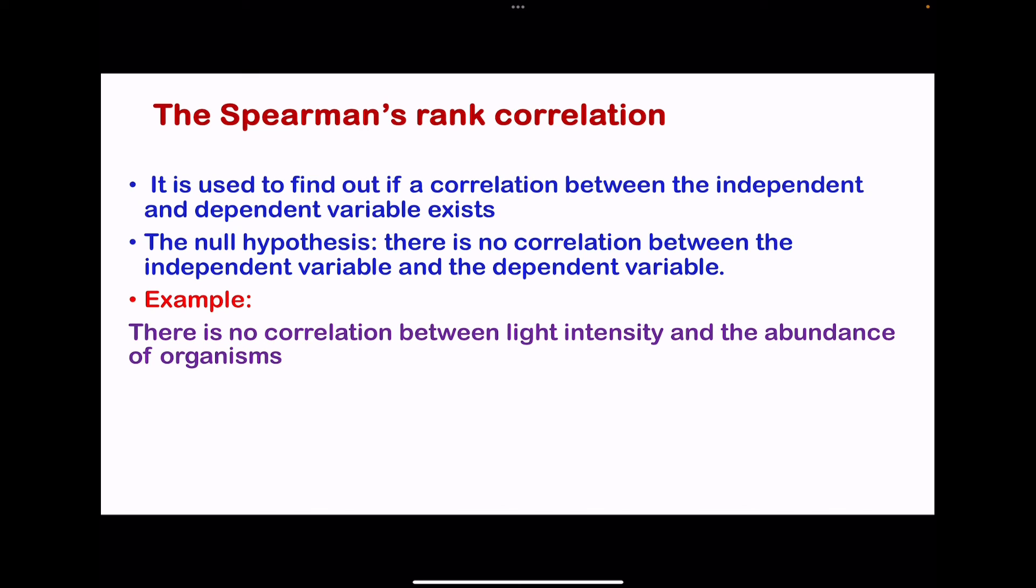The example I have here: they could ask about a correlation between light intensity and the abundance and distribution of organisms within an area. So you will collect results from areas of varying light intensity and see if the changes in light intensity have affected the abundance and distribution of organisms.